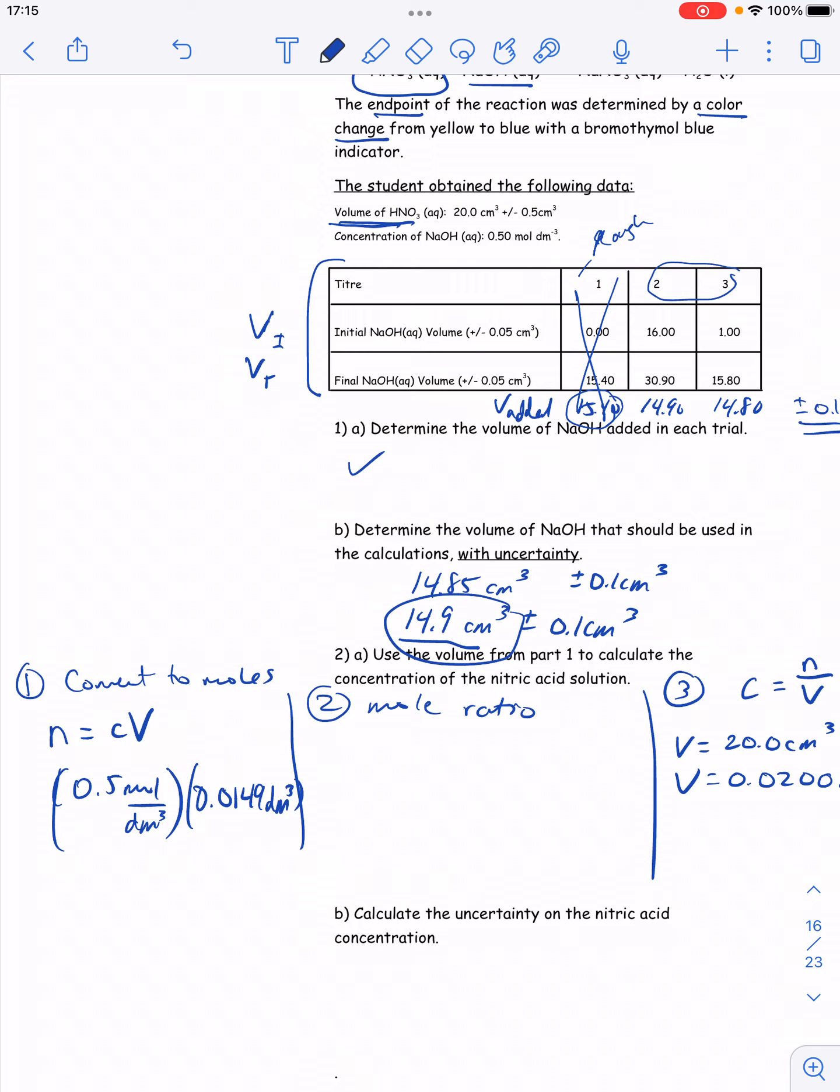So if I do 0.5 times 0.0149, I get the moles to 0.00745 moles. And that's the moles of the NaOH.